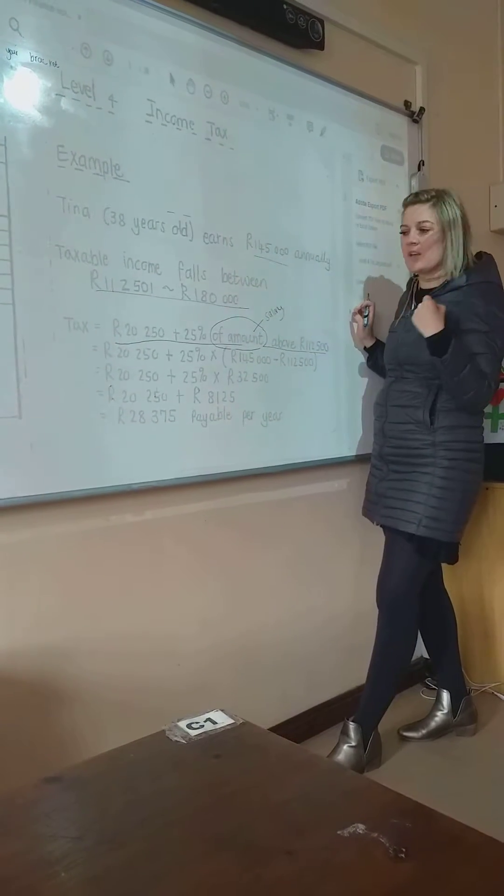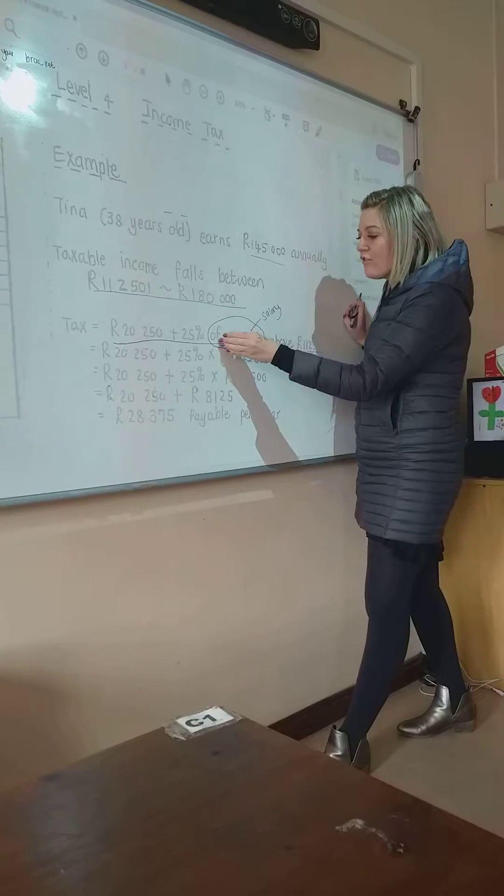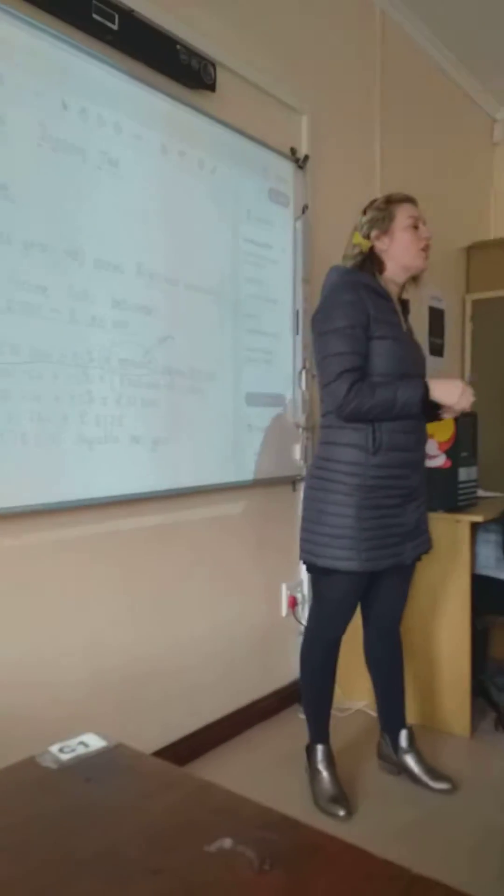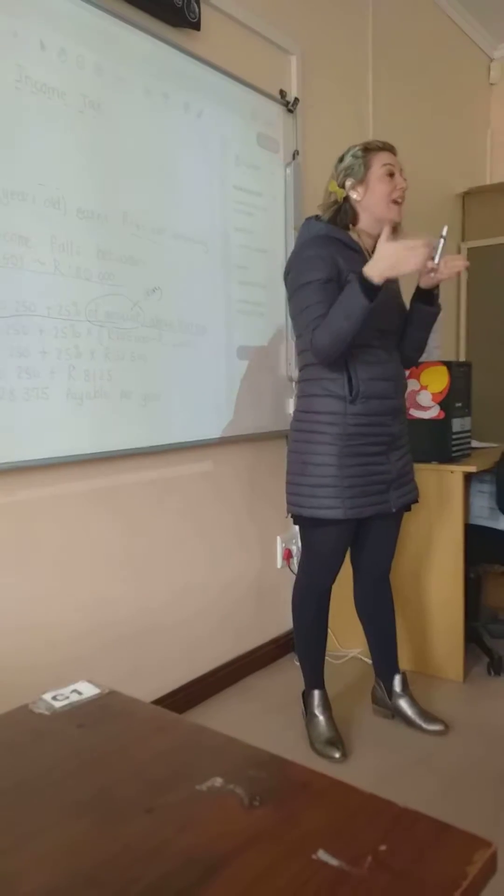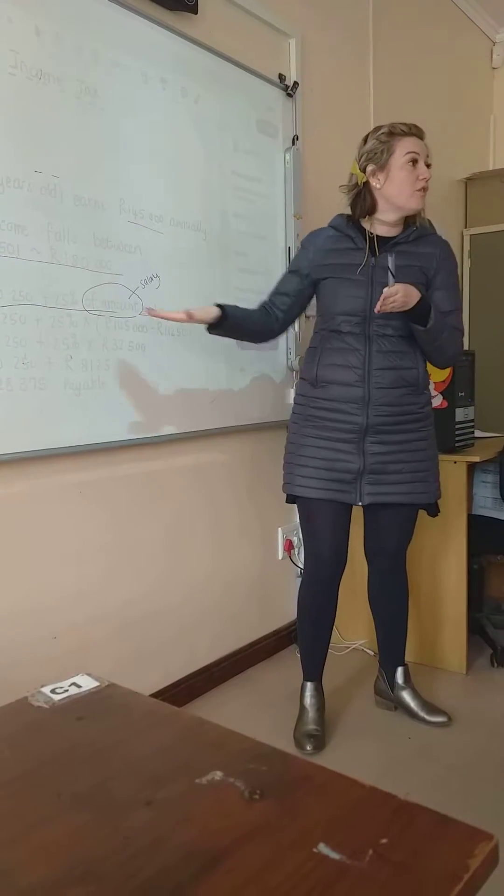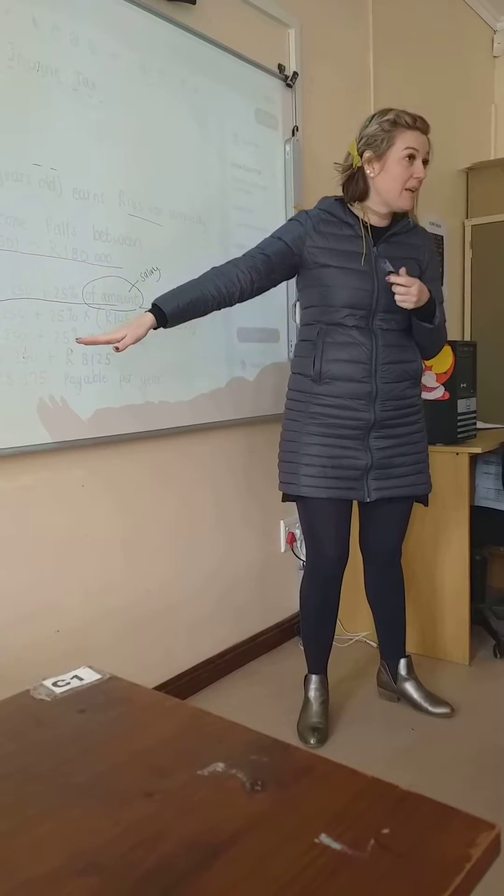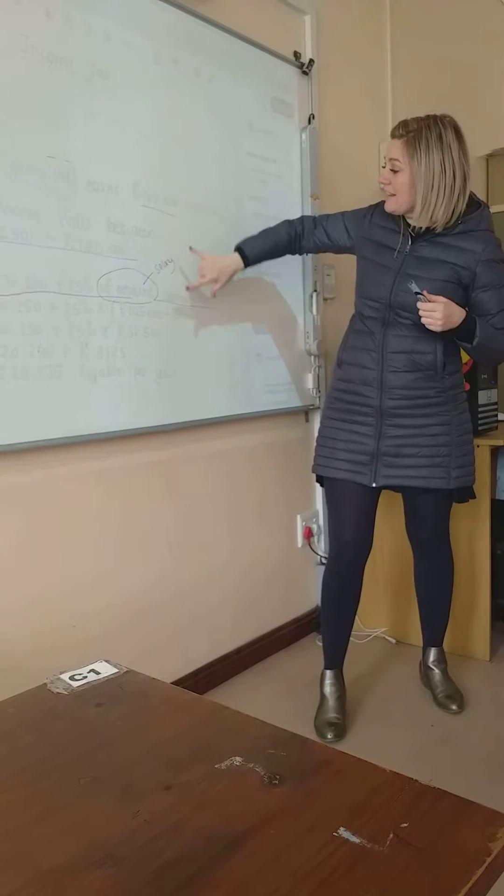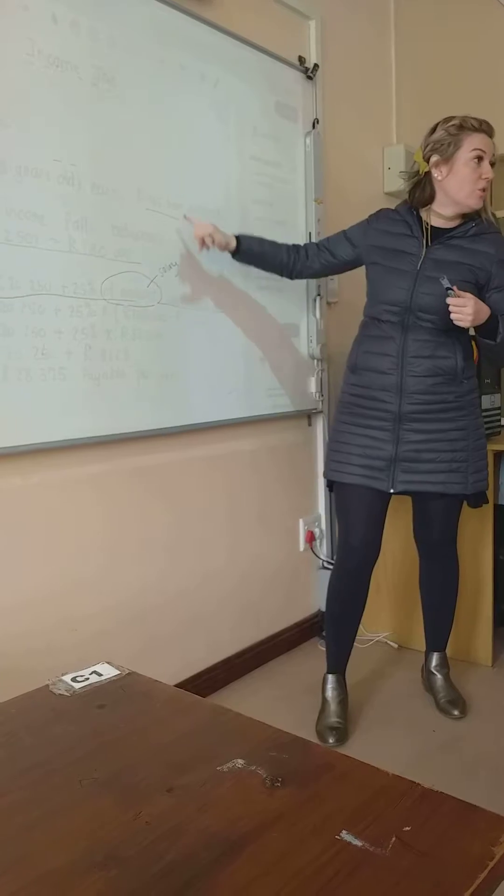Read it with me, then it's going to make sense. It says, of the amount above 112. In other words, anything you earn above that amount, you get taxed on, according to the formula. Are you with me? So if you earn that, then you have to calculate the difference between the two.